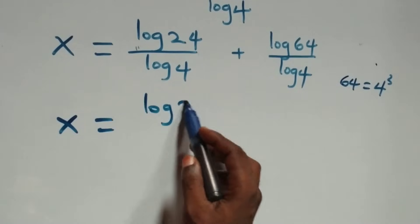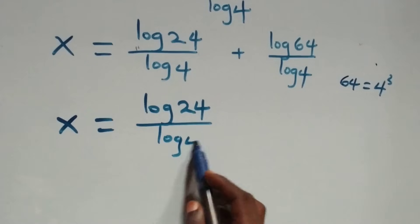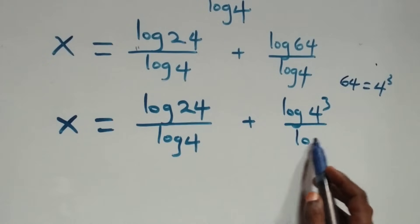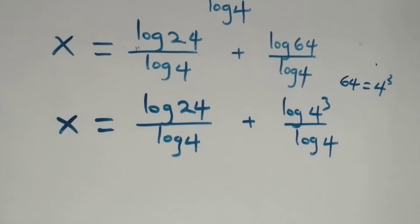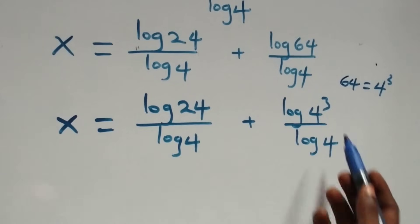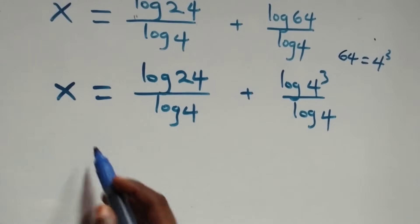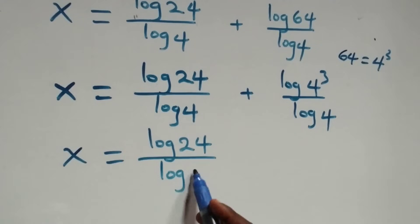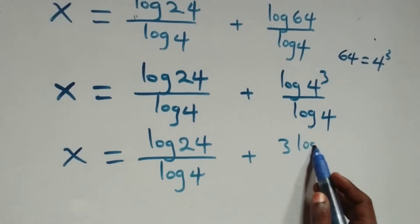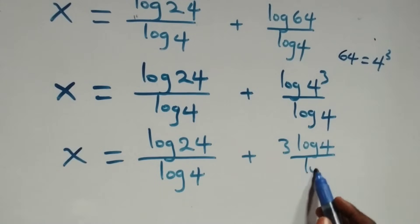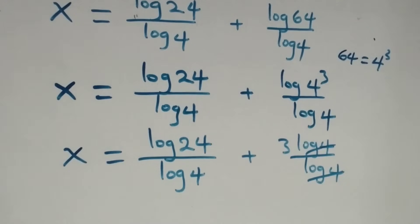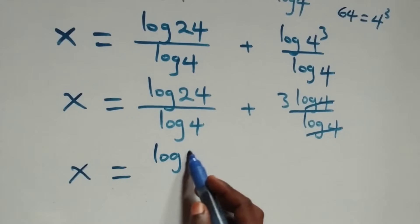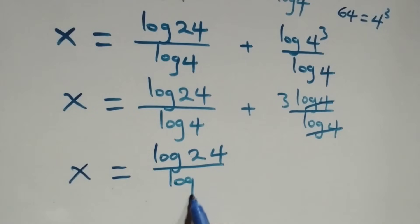So we have log twenty-four over log four plus log four raised to power three over log four. Applying the power rule, the three comes down: log twenty-four over log four plus three log four over log four. The log four terms cancel, leaving three, so x equals log twenty-four over log four plus three.